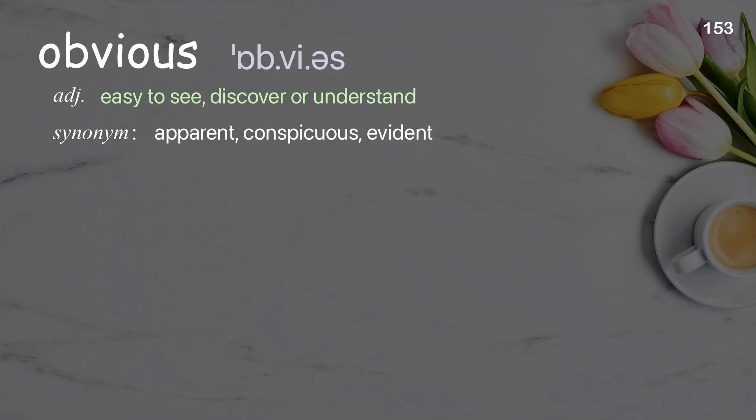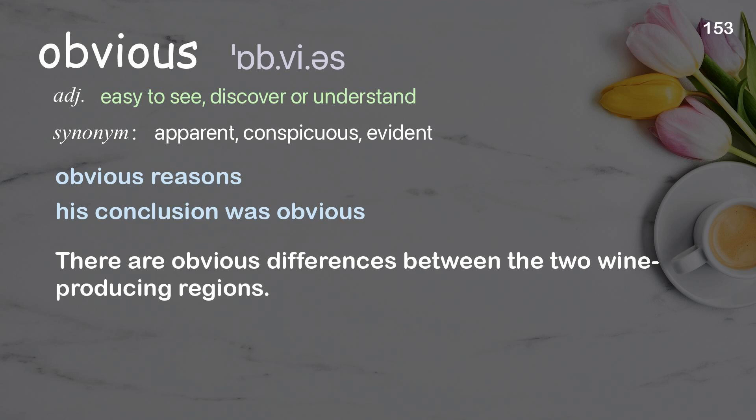Obvious: easy to see, discover, or understand. Examples: obvious reasons, his conclusion was obvious. There are obvious differences between the two wine-producing regions.